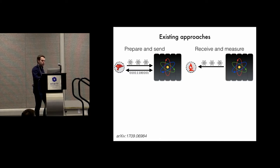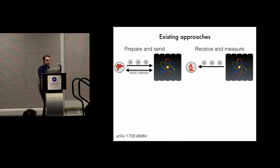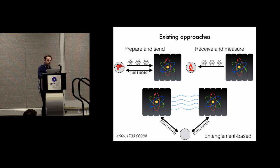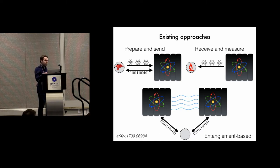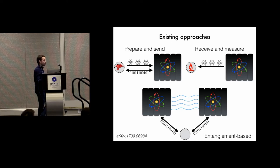Then there's a kind of dual to this, called receive-and-measure protocols, where the verifier should be able to receive photon states from the prover and measure the polarization at different angles and directions. And lastly, as you heard in Anand's talk yesterday, there are entanglement-based protocols where the verifier is completely classical, but it has to interact with two or more quantum provers that are not communicating but are sharing quantum correlations known as entanglement.